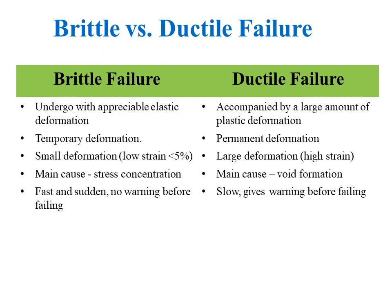In summary, brittle failure occurs with appreciable elastic deformation, whereas ductile failure occurs with plastic deformation. Elastic deformation is reversible and temporary, whereas plastic deformation is permanent and irreversible. Brittle failure occurs at low strain and ductile failure occurs at high strain. Stress concentration is the main cause of brittle failure, whereas ductile failure occurs due to void formation. Ductile failure gives prior warning before failing, whereas brittle failure is sudden and fast.